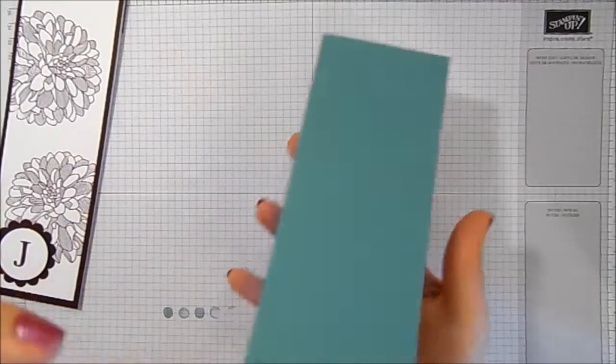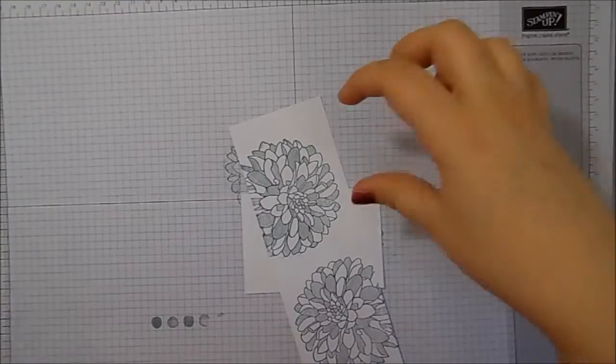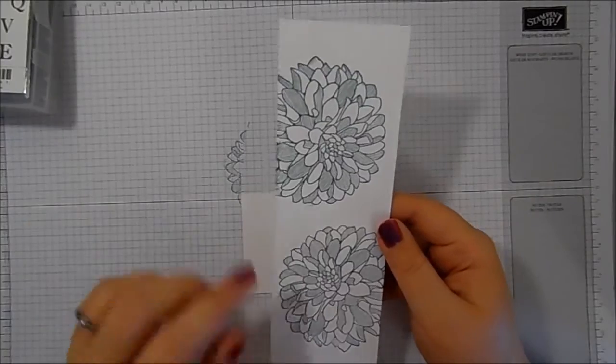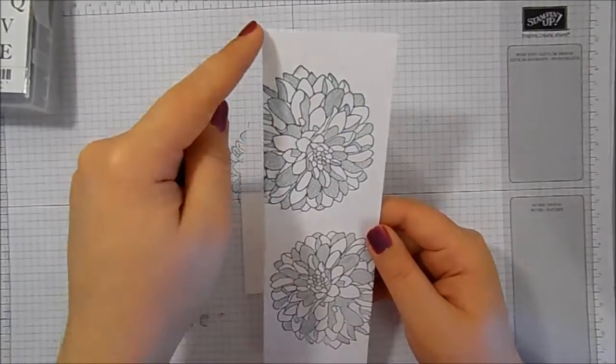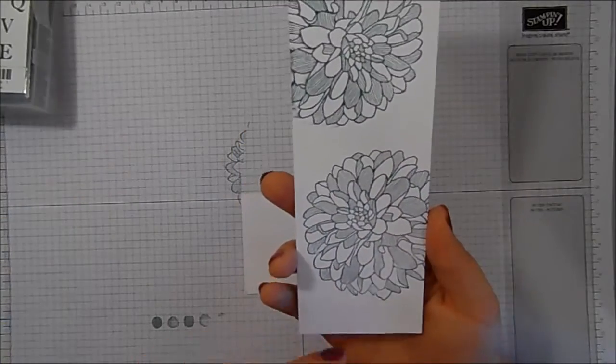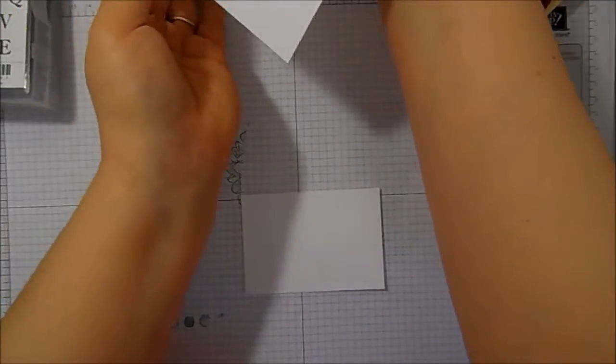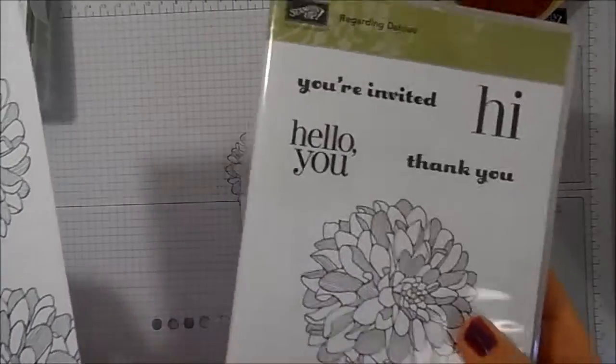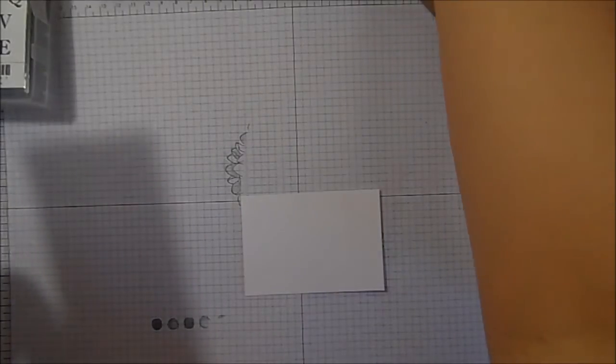And there we have a covered notebook. So I've got a piece of Whisper White cardstock that measures two and nine sixteenths by eight inches that I have stamped twice with the large Dahlia stamp from the Regarding Dahlia stamp set which is my stamp for my April Technique class.